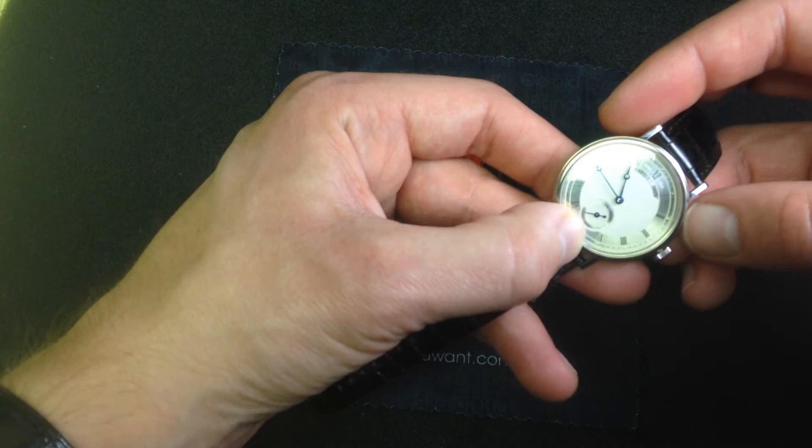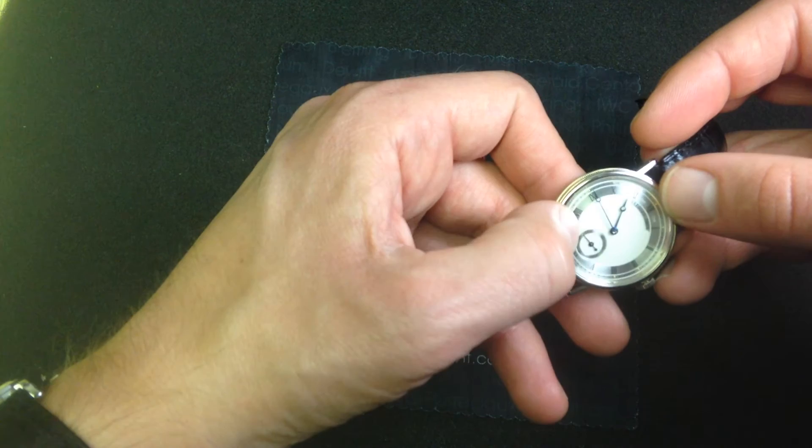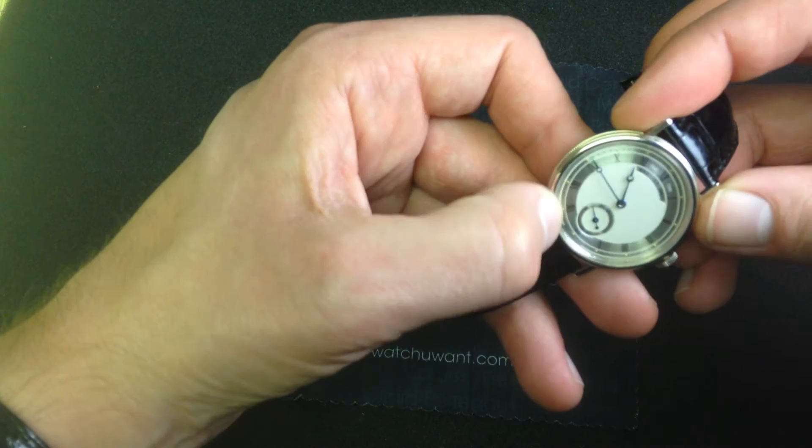This watch has heat-blued Breguet hands fired in the kiln, oxidized until they're a deep blue. That's another feature that's emblematic of Breguet watches, and although you can't quite see it on the iPhone.